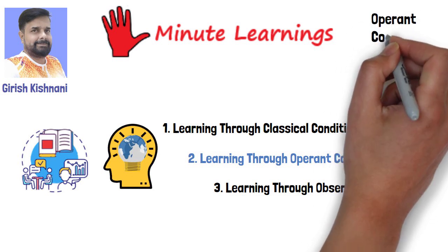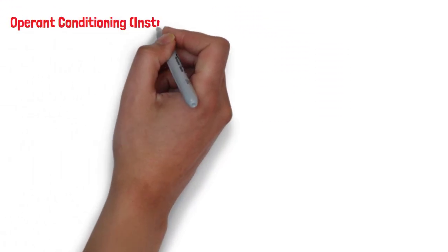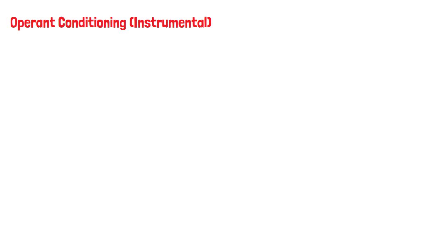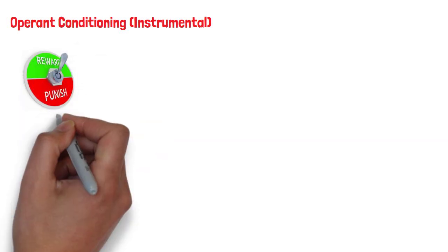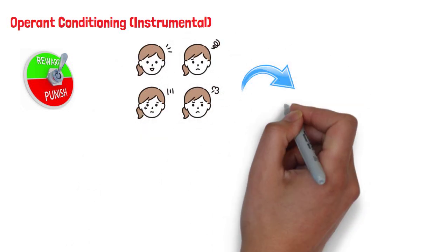In this video we shall focus on learning through operant conditioning. Sometimes referred to as instrumental conditioning, operant conditioning is a method of learning that employs rewards and punishments for behavior. It creates an association between a behavior and its consequence.